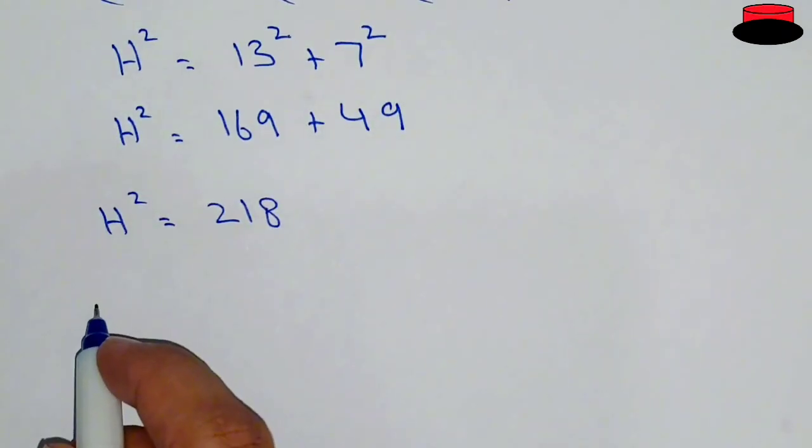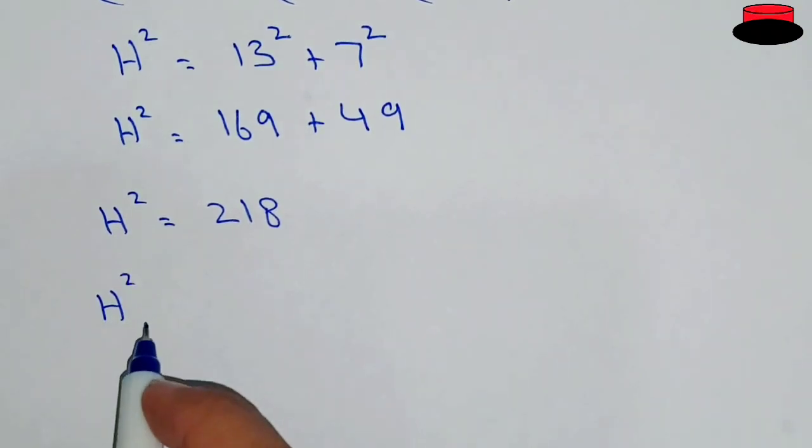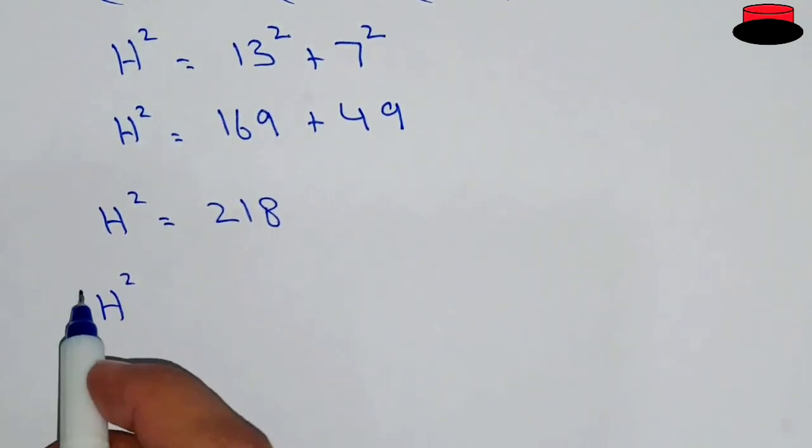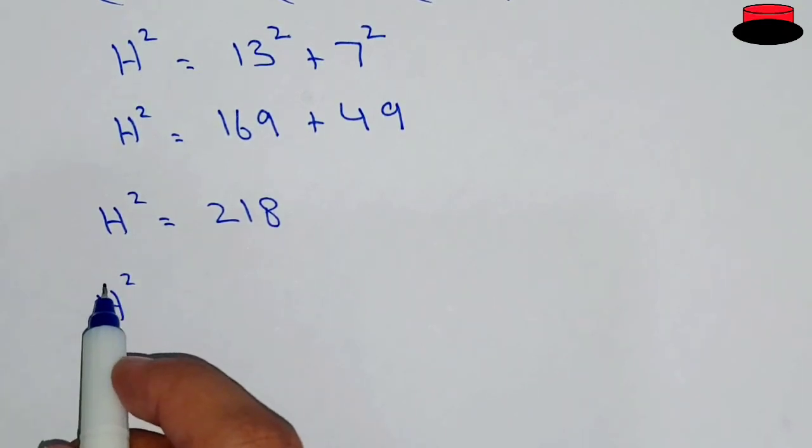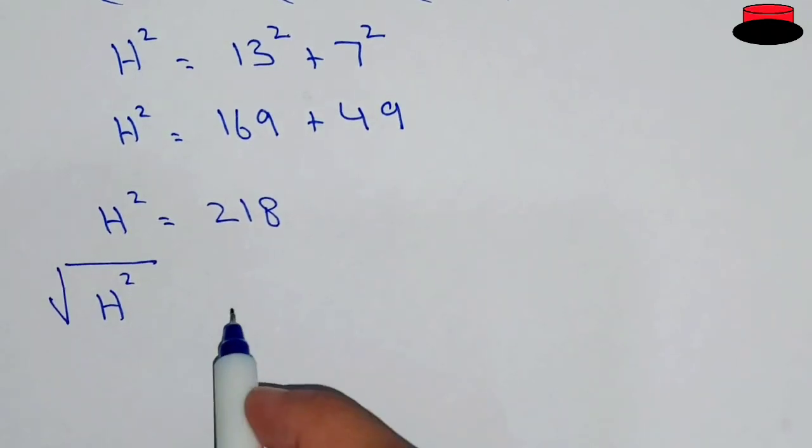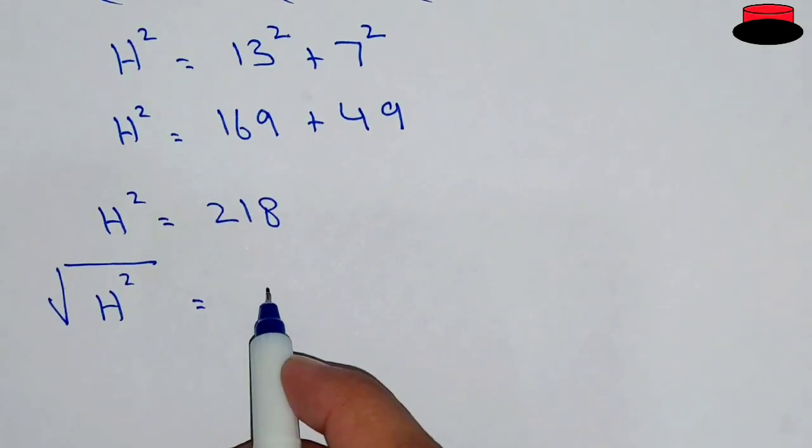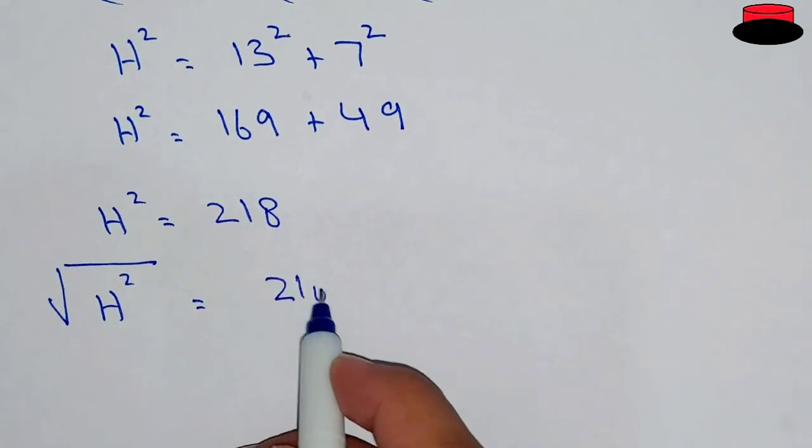So we will take the square root on both the sides. So it will be square root of H squared, hypotenuse squared, equal to square root of 218.